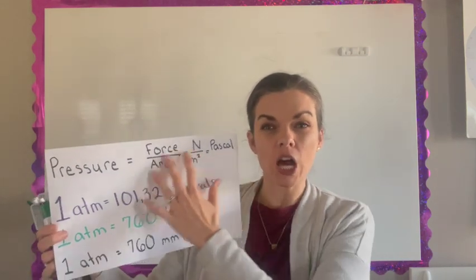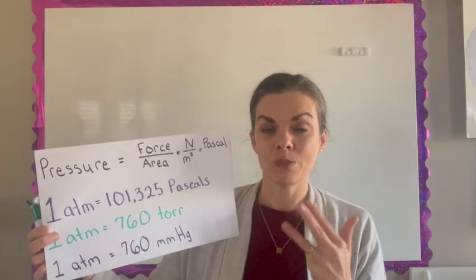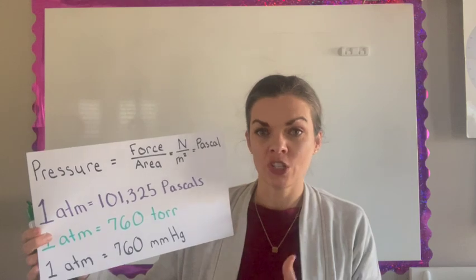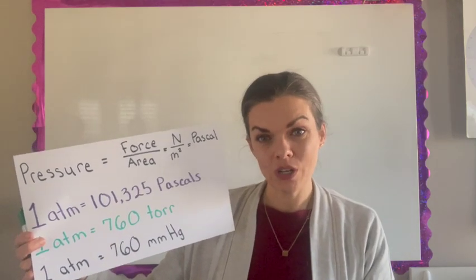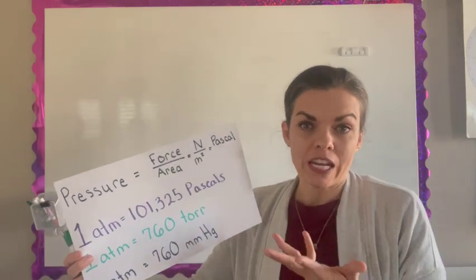So we have a lot of ways of measuring pressure: pascals, atmosphere, torr, and millimeters of mercury. I think we're actually going to see all of these in this book so maybe just write them down on your little note card that you're keeping formulas on so that you have it handy.